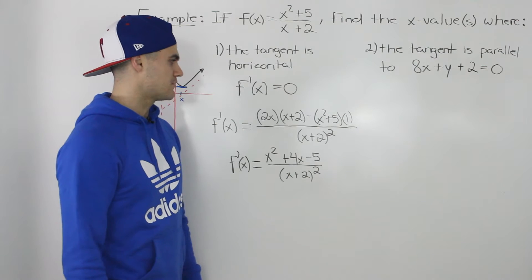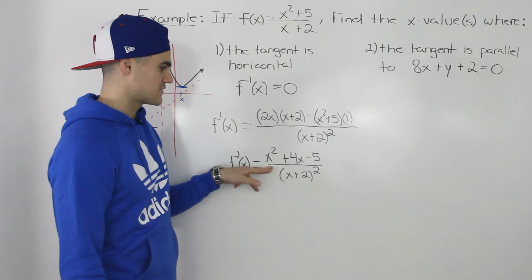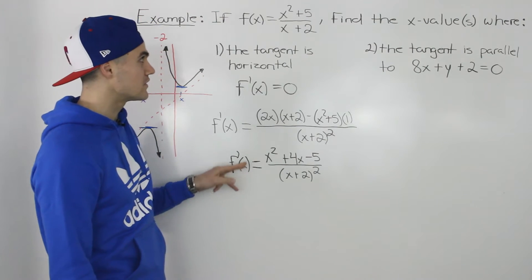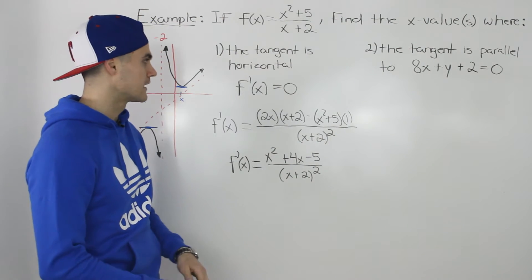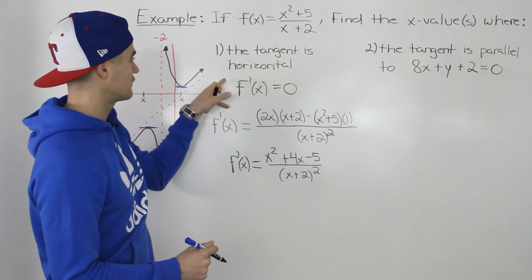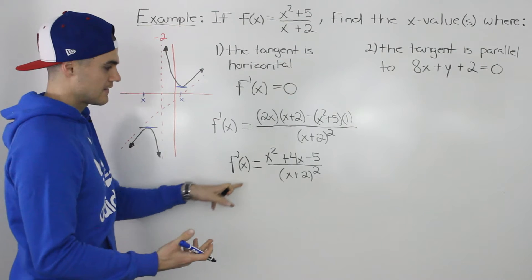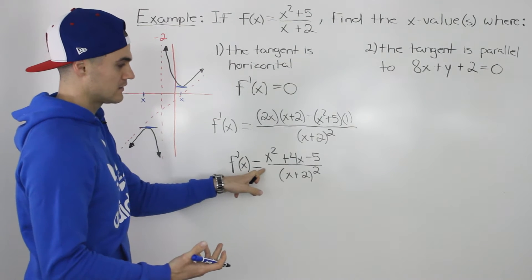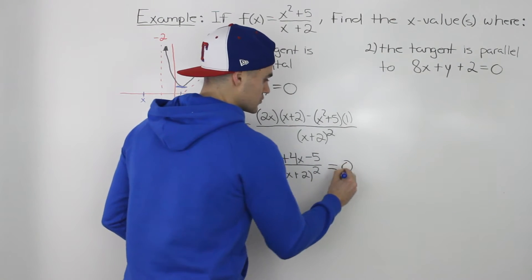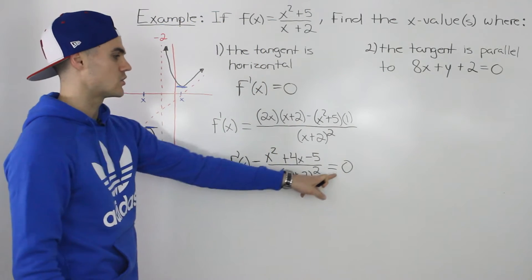When we simplify the numerator, we end up with x squared plus 4x minus 5 all over x plus 2 squared for the derivative of this function. Going back to the original question, we have to find the x values where the tangent is horizontal, meaning we find where the derivative is equal to 0, because a horizontal line has a slope of 0.